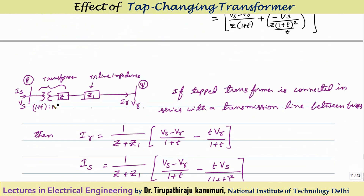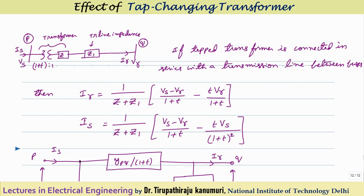Practically, a tap changing transformer is not present alone — a transmission line with per-unit impedance Z1 is also present, either on the primary or secondary side. If the transmission line is on the secondary side with per-unit impedance Z1, and the transformer per-unit impedance is Z, then we simply add the two impedances. Wherever Z appears in the above equations, replace it with Z + Z1.